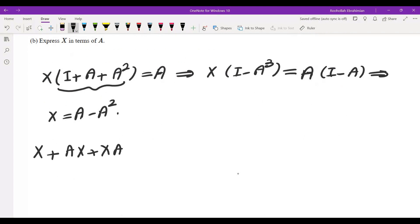plus XA squared, that is A minus A squared plus A times this which is A squared minus A cubed, plus X times A squared which is A cubed minus A to the power of 4. These two terms cancel, these three terms are all zero, so that is exactly A.